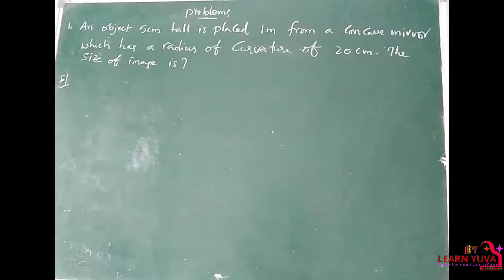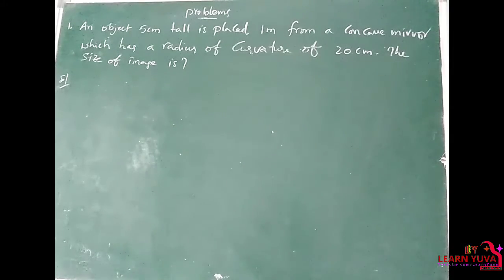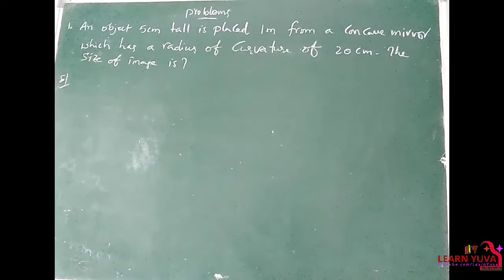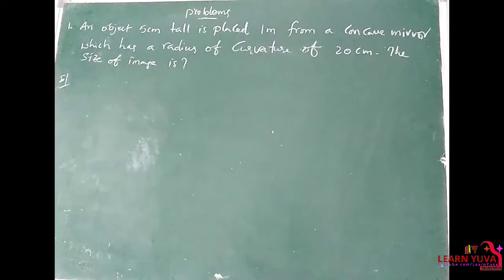An object 5 cm in size is placed 1 meter from a concave mirror which has a radius of curvature of 20 cm. We have to find out the size of the image.